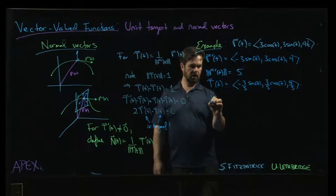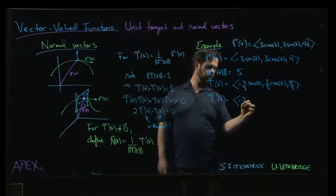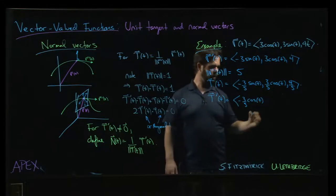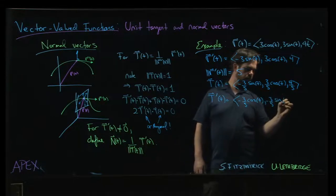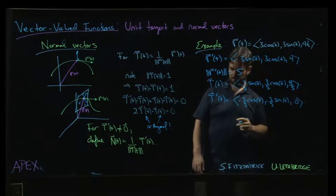So from here we can calculate T prime: minus 3 over 5 cosine t, minus 3 over 5 sine t and then 0.